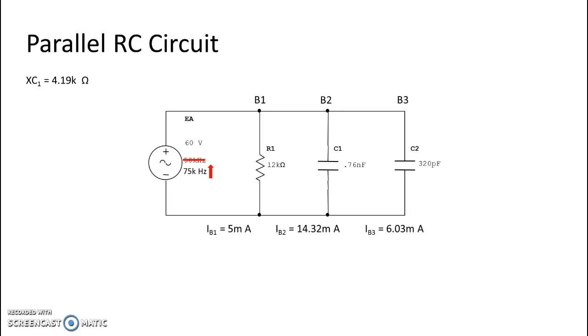So it was 4.19 k ohms. With the increase in frequency, we do see that it has gone down to 2.79 k ohms. We are expecting to see a similar decrease in the ohmic value of C2. It was 9.95 k. Now it is 6.64 k.